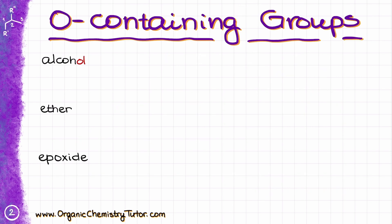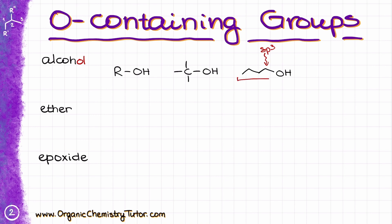Moving on, we have oxygen-containing groups, and probably the most iconic and most common is going to be an alcohol. Alcohol is a compound where you have ROH, and the OH has to be specifically connected to an SP3 hybridized carbon — something where the carbon is not containing a double bond or any other functional group. For instance, I can draw a simple alcohol molecule like butanol, where this carbon is SP3 hybridized, and the left side of the molecule is the R group.